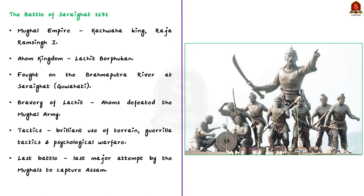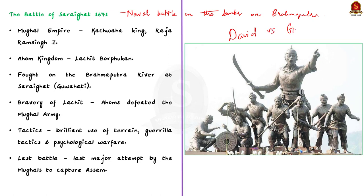The Battle of Saraighat was a naval battle fought in the year 1671, between the Mughal Empire and the Ahom kingdom led by Lachit Borfuken. It was fought on the banks of the Brahmaputra river at a place called Saraighat, now located in the Gauhati district of Assam. The Ahom army was numerically weaker than the Mughal army, but under Lachit's extraordinary leadership, the Ahoms defeated the Mughals using brilliant tactics like use of terrain, clever diplomatic negotiations, guerrilla tactics, psychological warfare, and military intelligence. The Battle of Saraighat was the last major attempt by the Mughals to extend their empire into Assam, and is one of the most under-known battles in India.